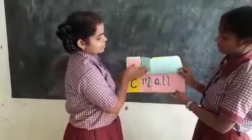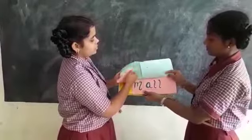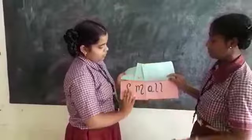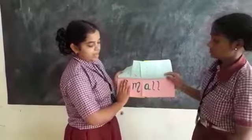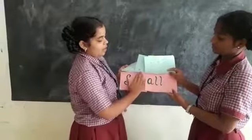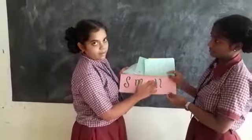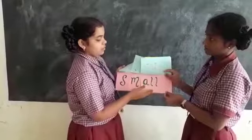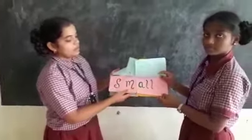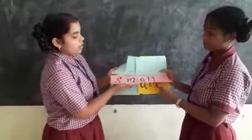And next one: smile. So if we close S, we have mile here. And if we close M, we have ile here. Again here we get three words in the one.